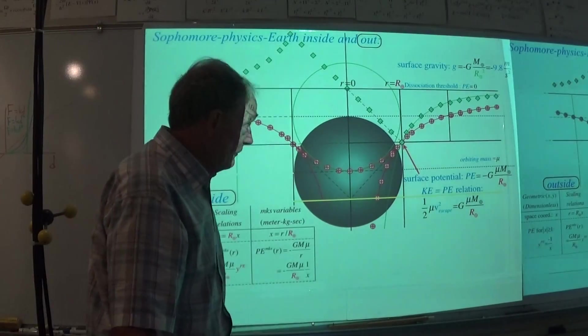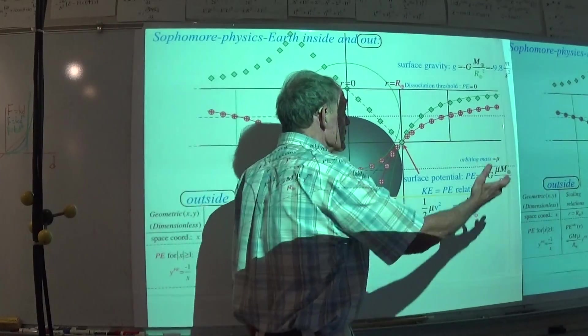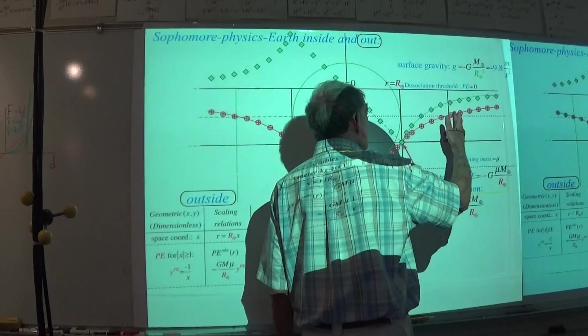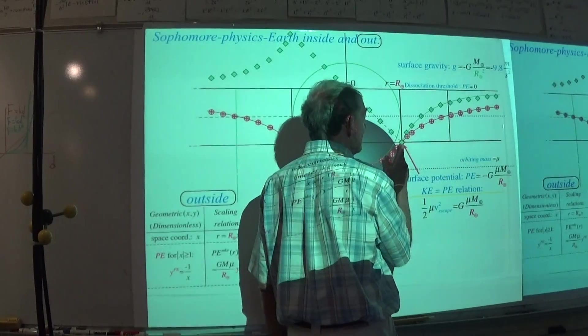So the scaling relation is simply this, and then that gives this, and all of the formulas that we're going to be putting down here have had this done to them to get the things. Now, escape velocity, you come in on this potential, crash right there, from infinity.